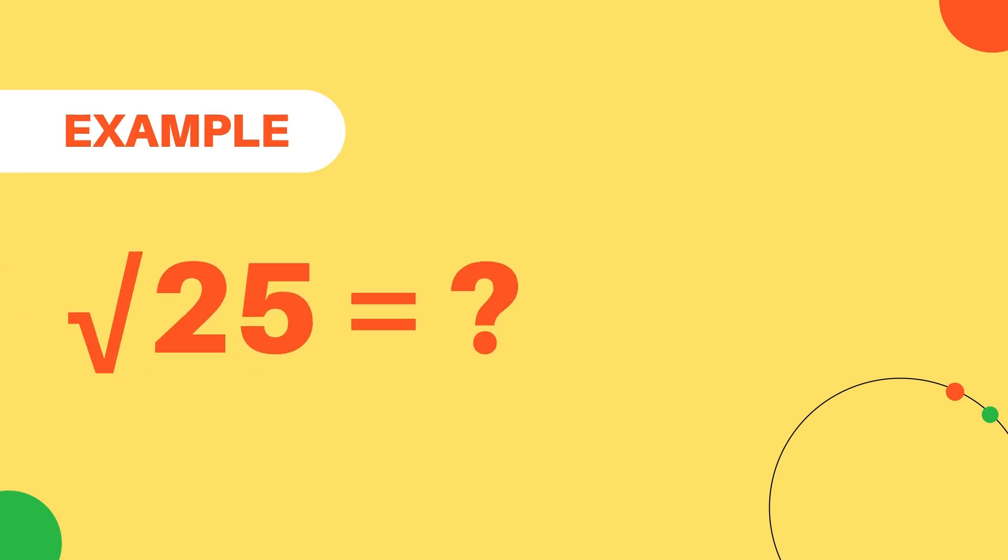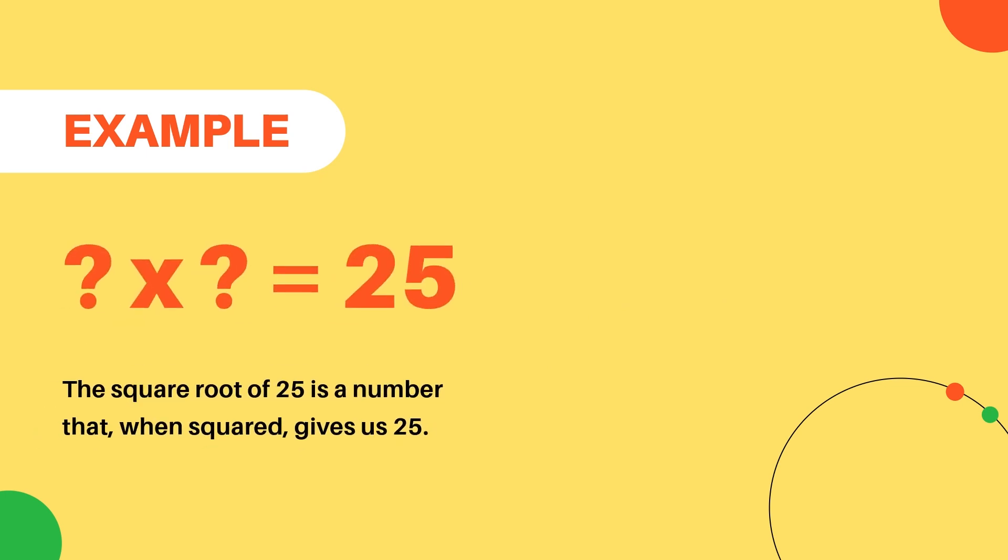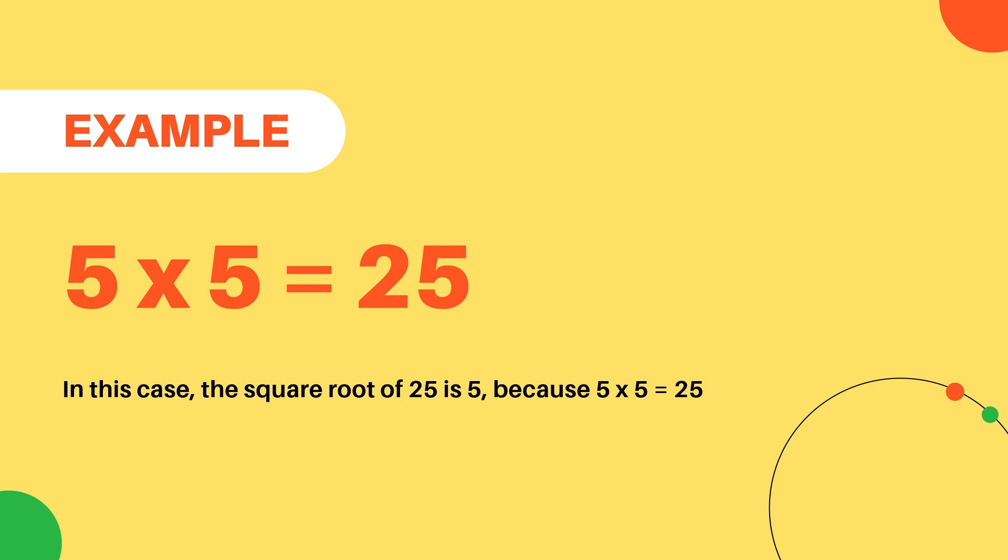For example, let's calculate the square root of 25. The square root of 25 is a number that, when squared, gives us 25. In this case, the square root of 25 is 5, because 5 multiplied by 5 equals 25.